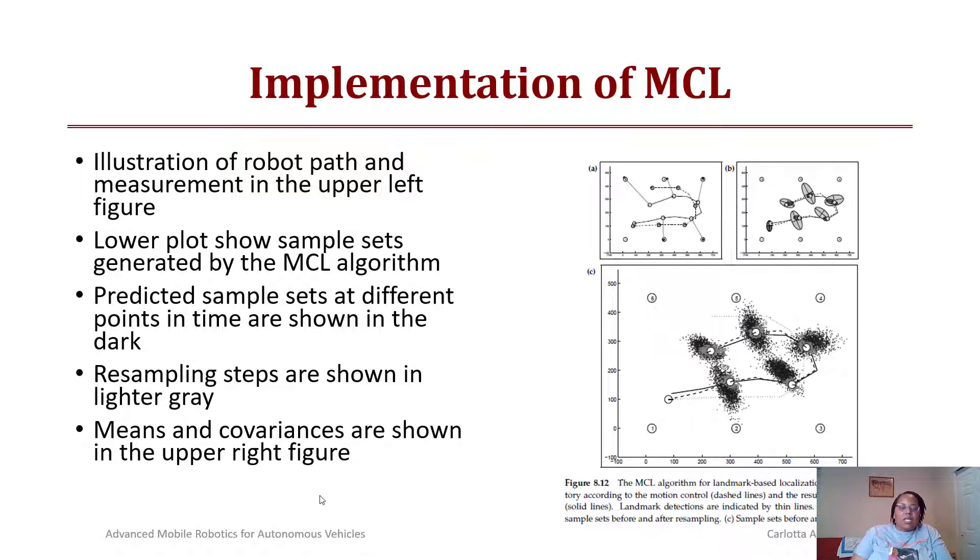Here's another implementation of Monte Carlo localization. We have a robot path measured in the upper left figure, showing how the robot was driven. The lower path shows sets of particles based upon the robot's sensor readings as it moves around by using Monte Carlo localization, with predicted sample sets at different points in time shown in the dark values and resampling steps in lighter gray. The means and covariance are shown in the upper right corner. As the robot moves through the path, the mean and covariance should be getting smaller.